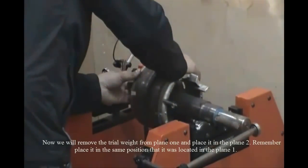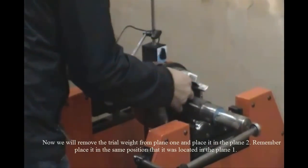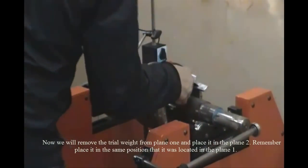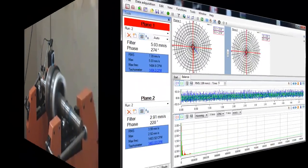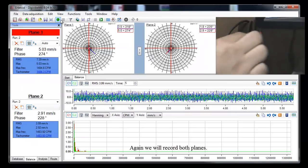Now we will remove the trial weight from plane 1 and place it in the plane 2. Remember, place it in the same position that it was located in the plane 1. Again we will record both planes.